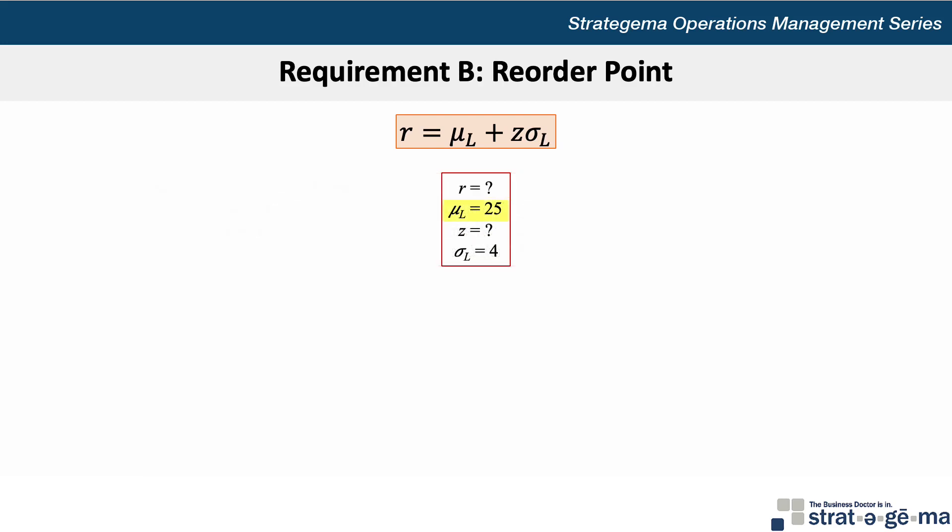We know the average demand during the lead time is 25 units, and the standard deviation is 4, and in order to solve for R, we first need to know Z.